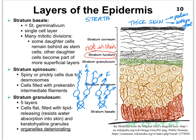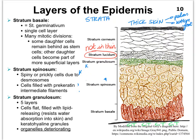The next sub-layer is the stratum spinosum. It is called that because the cells look prickly. This is due to desmosomes holding on to the cell membranes when these cells lose fluid during histological preparation, giving them nice spiny corners. The cells are also starting to produce keratin, so at this point they are filled with pre-keratin intermediate filaments.